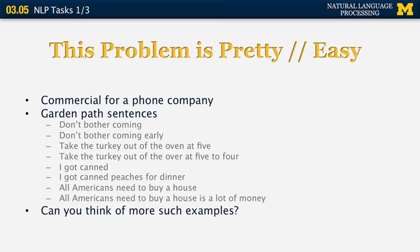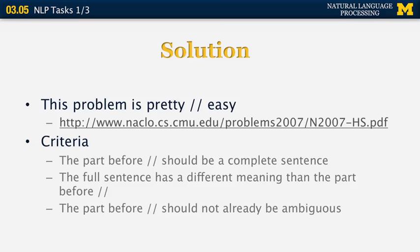This was essentially the topic of a NACLO problem. The solutions are available on the NACLO website, and there are many examples there. The criteria used to judge them are: the part before the two slashes should be a complete sentence; the full sentence has a different meaning than the part before the slashes; and the part before the slashes should not already be ambiguous. If those criteria are met, then you have a good solution to this problem.